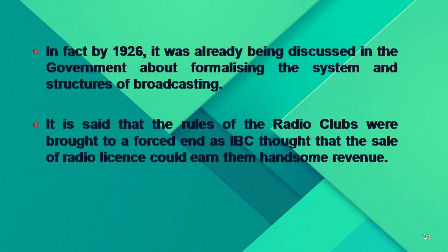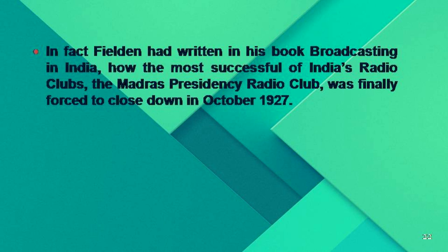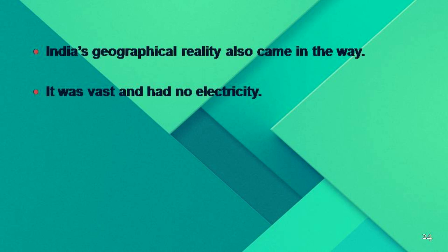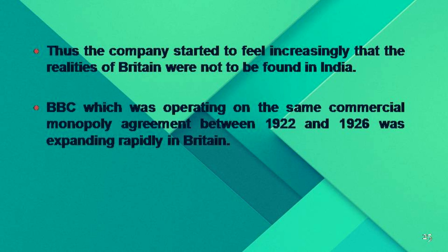It is said that the radio clubs were brought to a forced end as IBC Limited thought radio license sales could earn handsome revenue. Fielding had written in his book Broadcasting in India how the most successful radio club, the Madras Presidency Radio Club, was finally forced to close in October 1927. However, setting up the first operational transmitters in Bombay and Calcutta took one year and considerable cost was incurred. The company was also underfinanced with only 42,000 pounds.